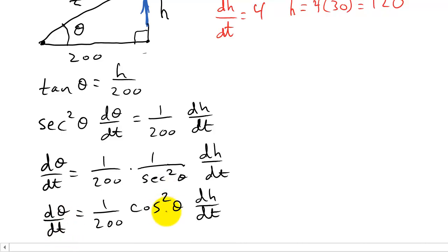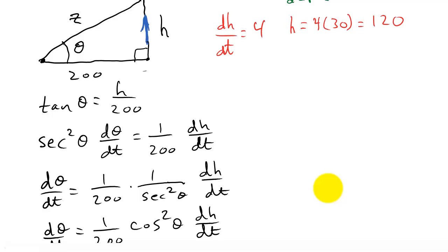So what do I need? Well, I need to know what cosine theta is, so I can plug a value into here. And I need dh/dt. Well, I have dh/dt. That's 4. But I don't know what cosine theta is. Well, let's come up here and look. I'm looking for cosine theta, and I know cosine theta is adjacent over hypotenuse.